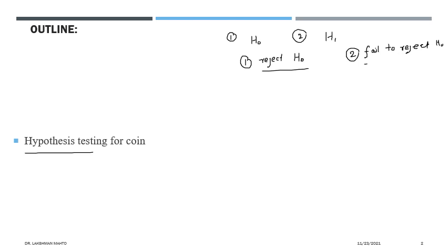These two scenarios come up: either reject H0 or fail to reject H0. Reject H0 means we are supporting H1 — we are accepting H1. Fail to reject H0 means we are accepting H0 in a conclusive way, because we fail to reject it. So only these two situations come in conclusion.